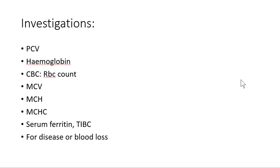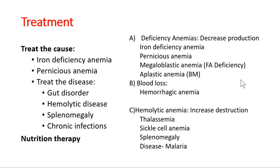For investigations: packed cell volume and total cell count are assessed — an infection can increase WBC count. Hemoglobin concentration will be less in most anemias. CBC is done to check RBC count and rule out infection via leukocyte count. All blood indices — MCV, MCH, and MCHC — are assessed. Serum ferritin is used to diagnose iron deficiency anemia, along with total iron binding capacity. Other investigations for disease or blood loss should also be done.